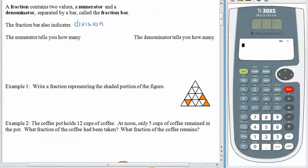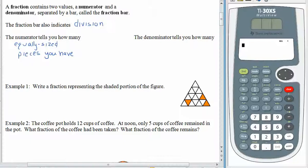The job of the numerator is to tell you how many equally sized pieces you have. The word numerator comes from the word enumerate, which means to count. So we're counting things. The numerator tells us how many we have.